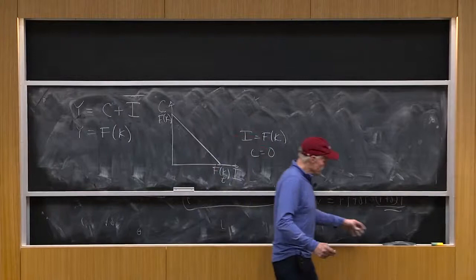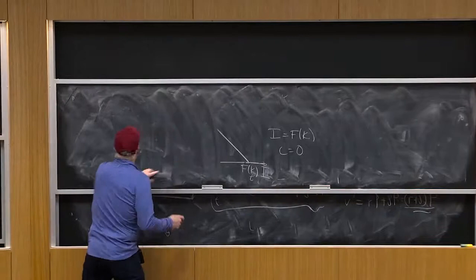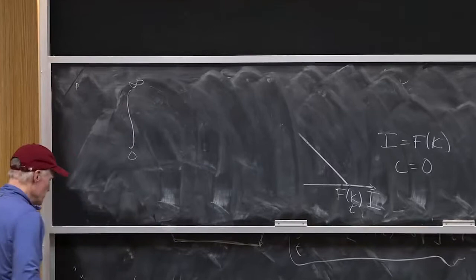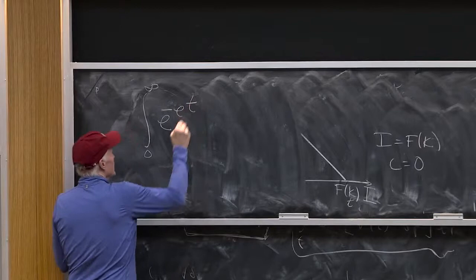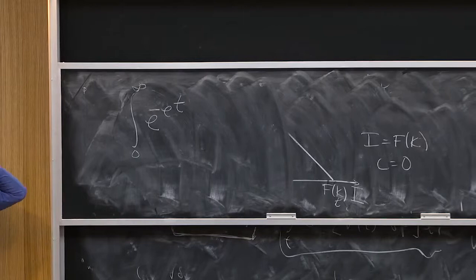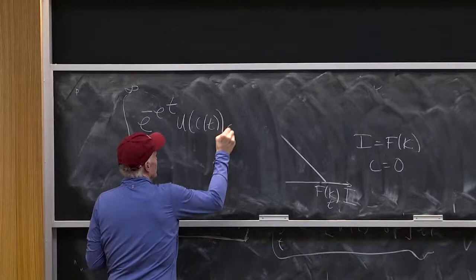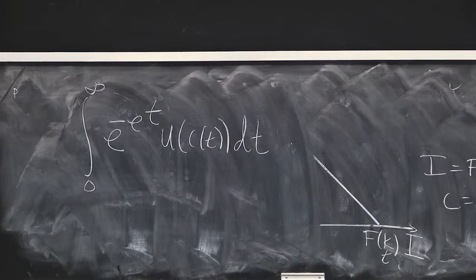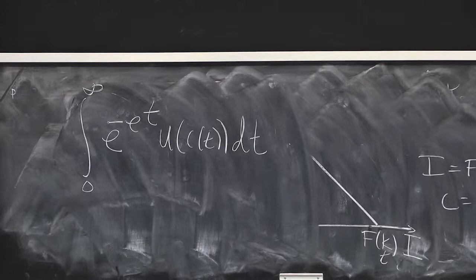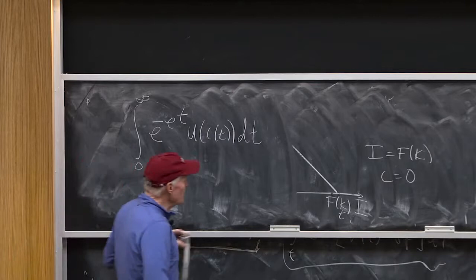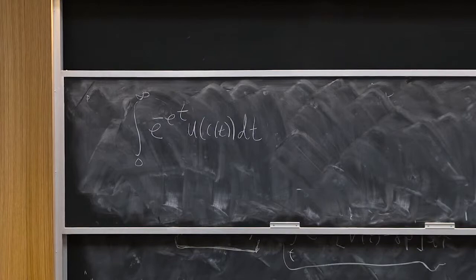Let me think about how we can set up this problem. A consumer wants to maximize the integral from 0 to infinity of e to the minus rho t — rho is the rate of time preference — times u of c of t, dt. That is, I want to maximize the discounted value of my utility over forever. People understand this model.